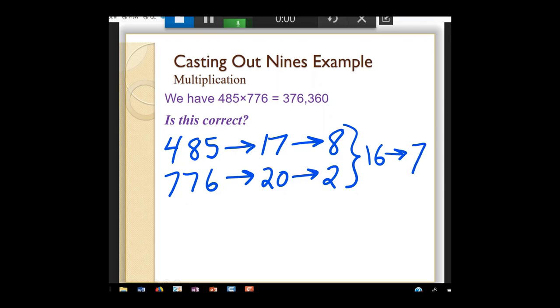Now I look at my answer. 3, 7, 6, 3, 6, 0. If I add up those digits, I get 25. And then 2 and 5 is 7. And since this answer of 7 and this answer of 7 are the same, my answer is probably correct.